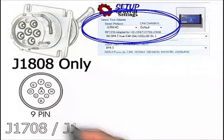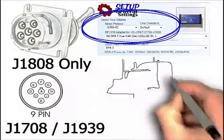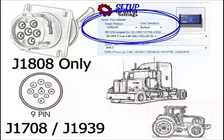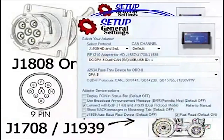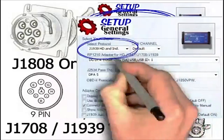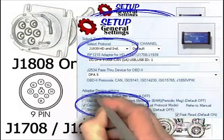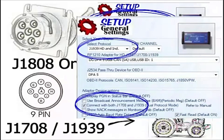If the vehicle you are diagnosing has a 9-pin Deutsch connector, the protocol could be J-1708 or J-1939. This connector is generally found in newer vehicles, industrial equipment, and agricultural equipment. In P.F. Diagnose, you should select J-1939 and J-1708 unless you know that the vehicle is J-1939 only — then select J-1939 and do not select additional protocols.